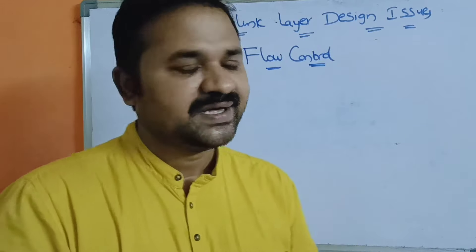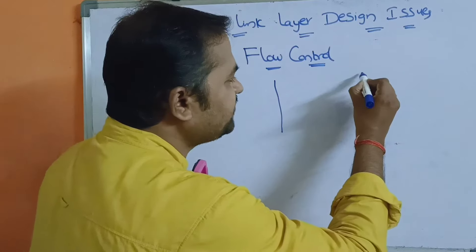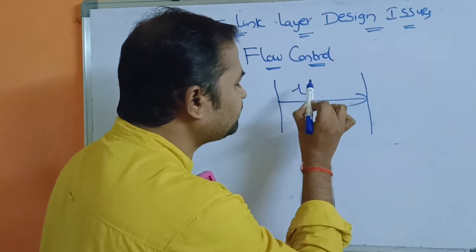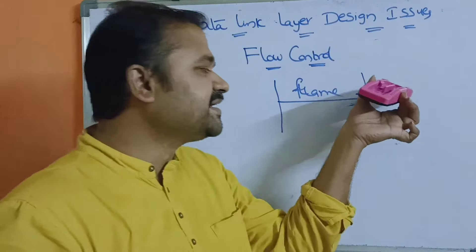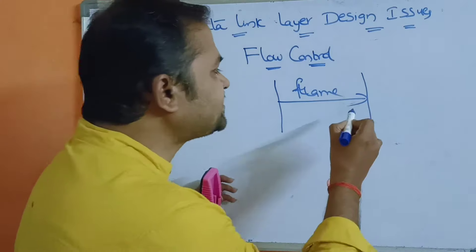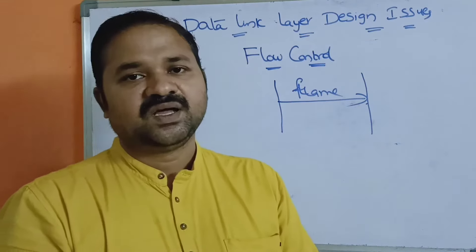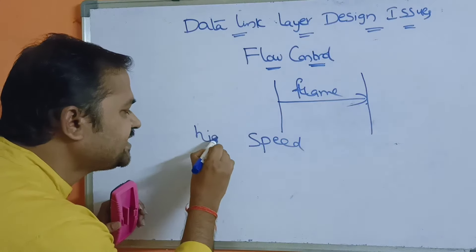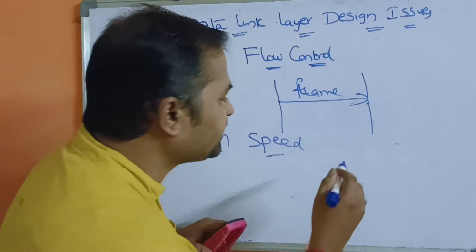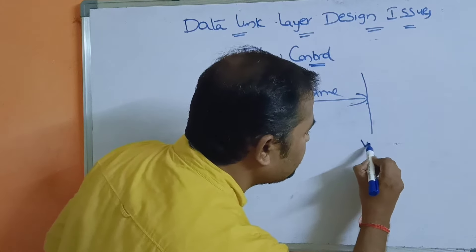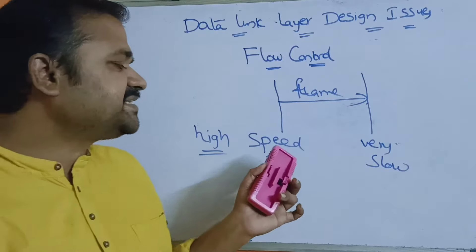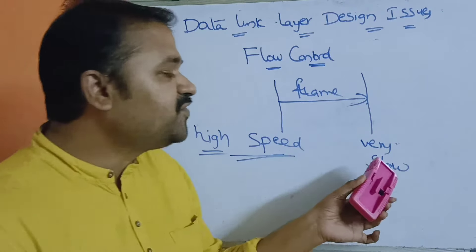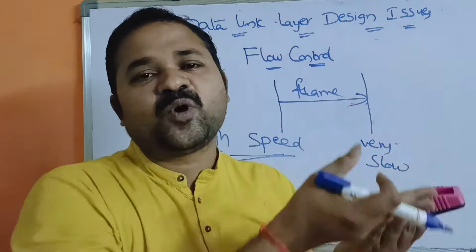Let us see what is flow control. Assume that we have a sender machine as well as a receiver machine. Sender sends a frame to the receiver. The receiver receives that frame, processes it, and provides an acknowledgement to the sender. But let us assume that the speed of the sender is very high, whereas the speed of the receiver is very slow. The sender is sending frames at a higher speed in which the receiver cannot consume the corresponding frames at that speed.